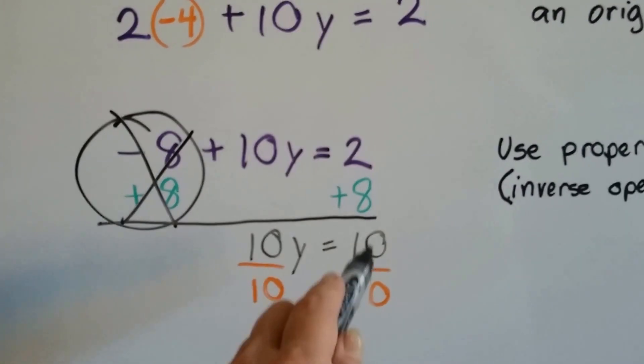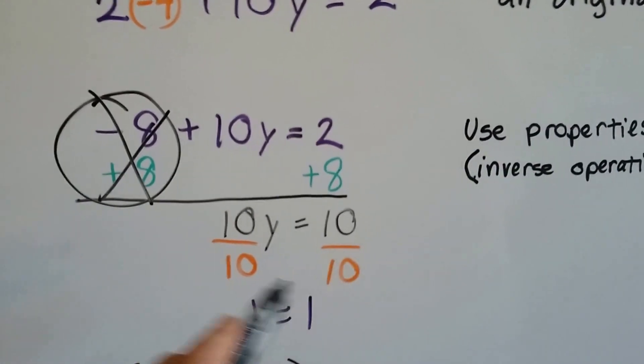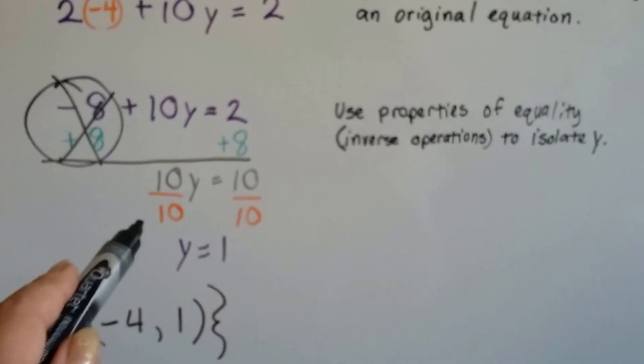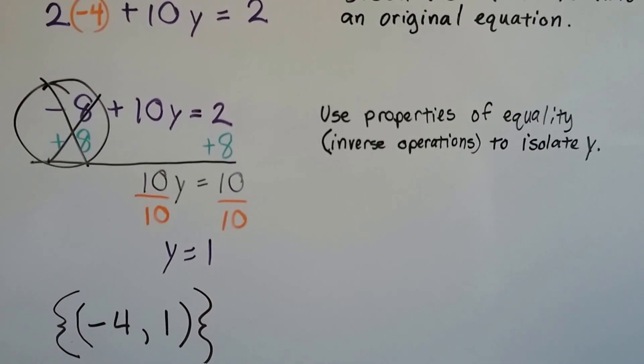We add 8 to this side, we get 10. 10y equals 10. Divide both sides by 10 to get that y by itself.